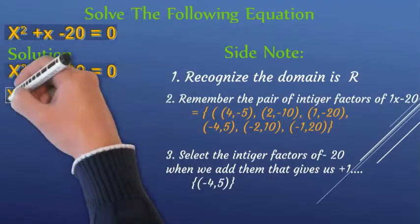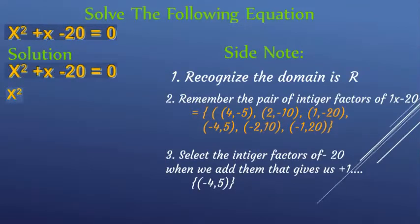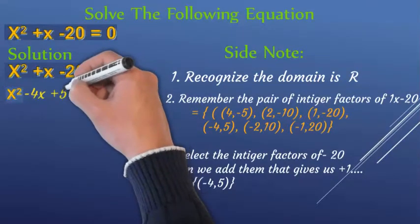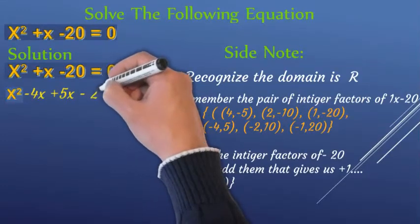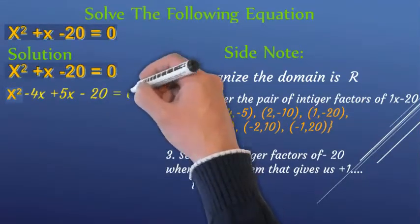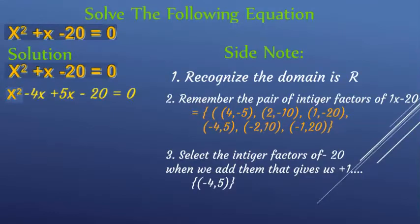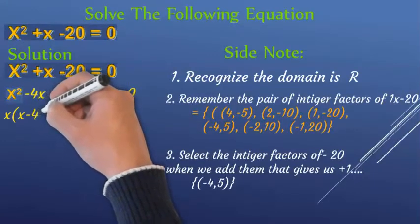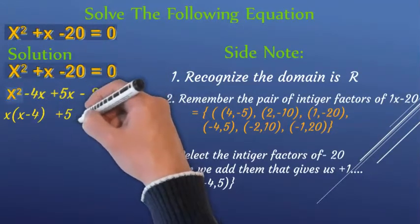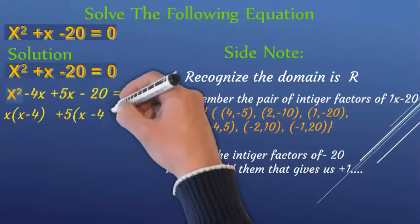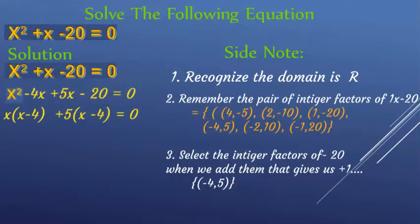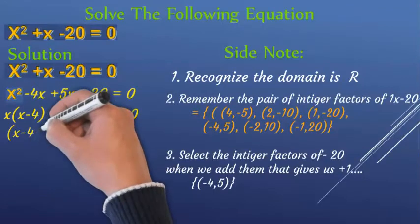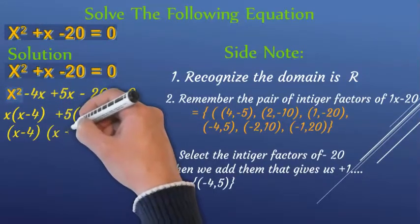So, we have x squared minus x, up to x minus x. We need to find x squared minus 4x squared equals x times x minus x minus 1, which is equal to x minus 1. We have x minus 4 is equal to factorize. The x minus 1 is equal to zero.